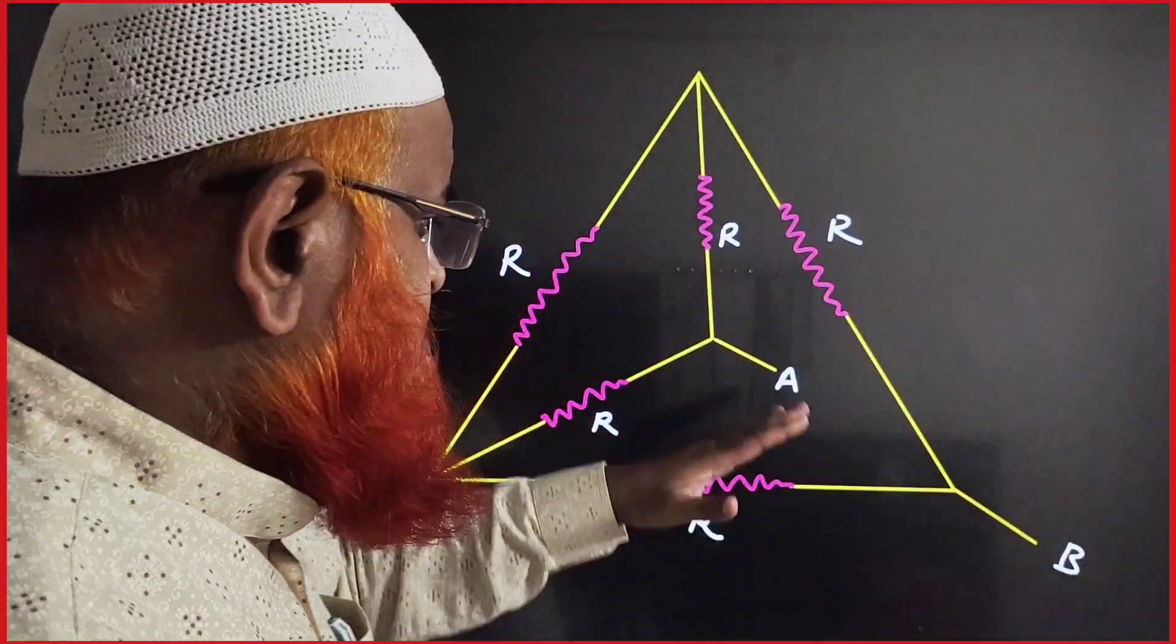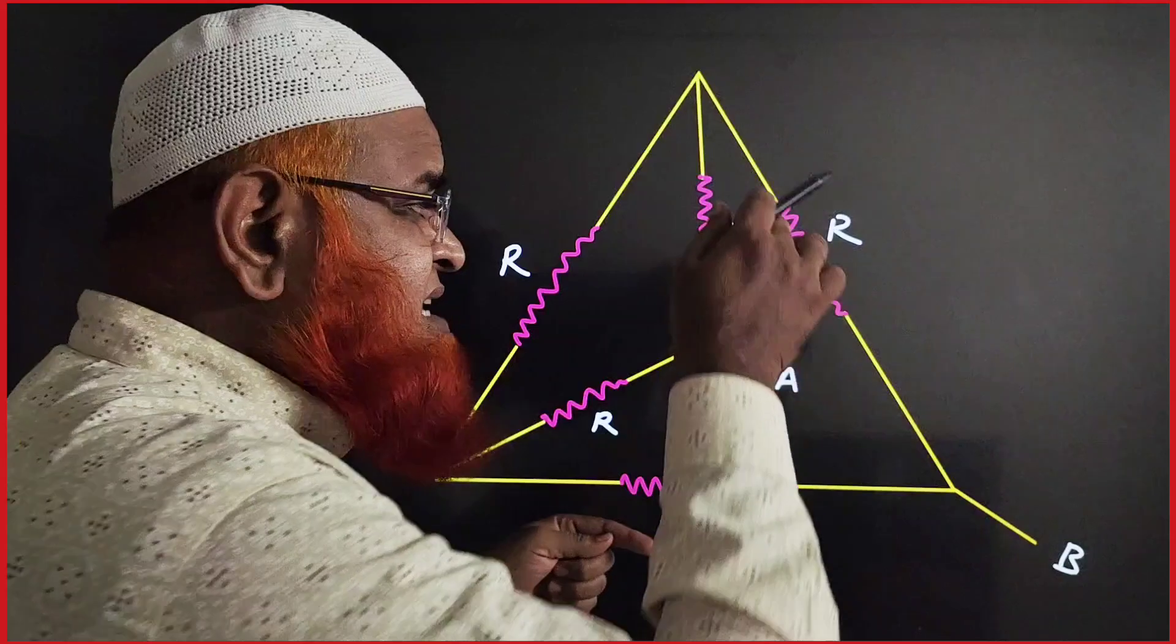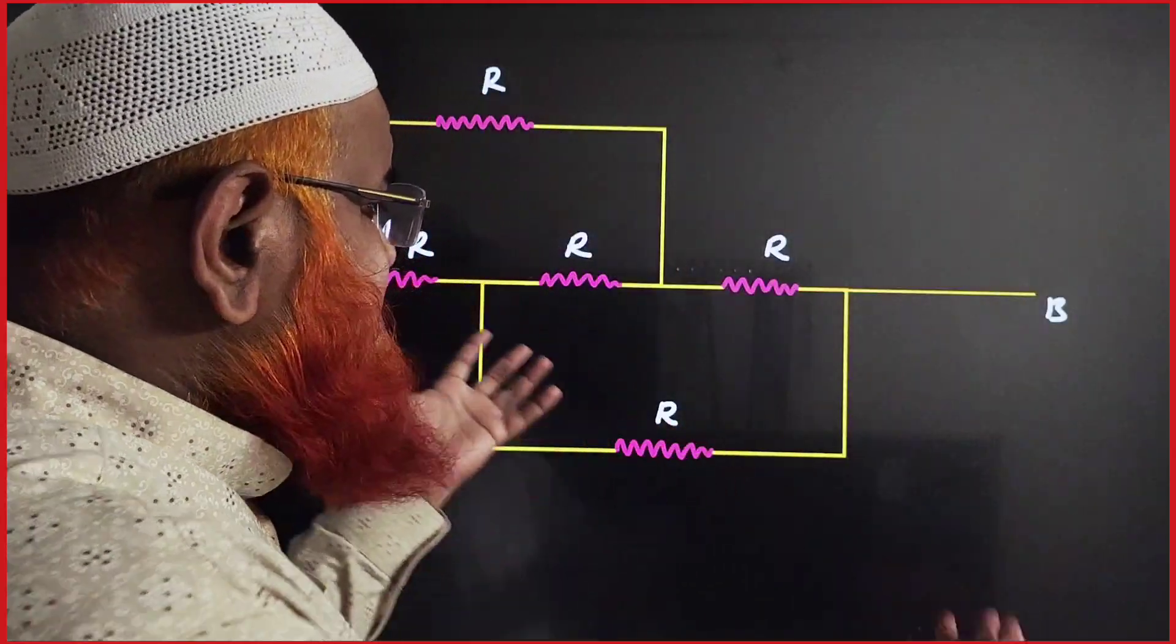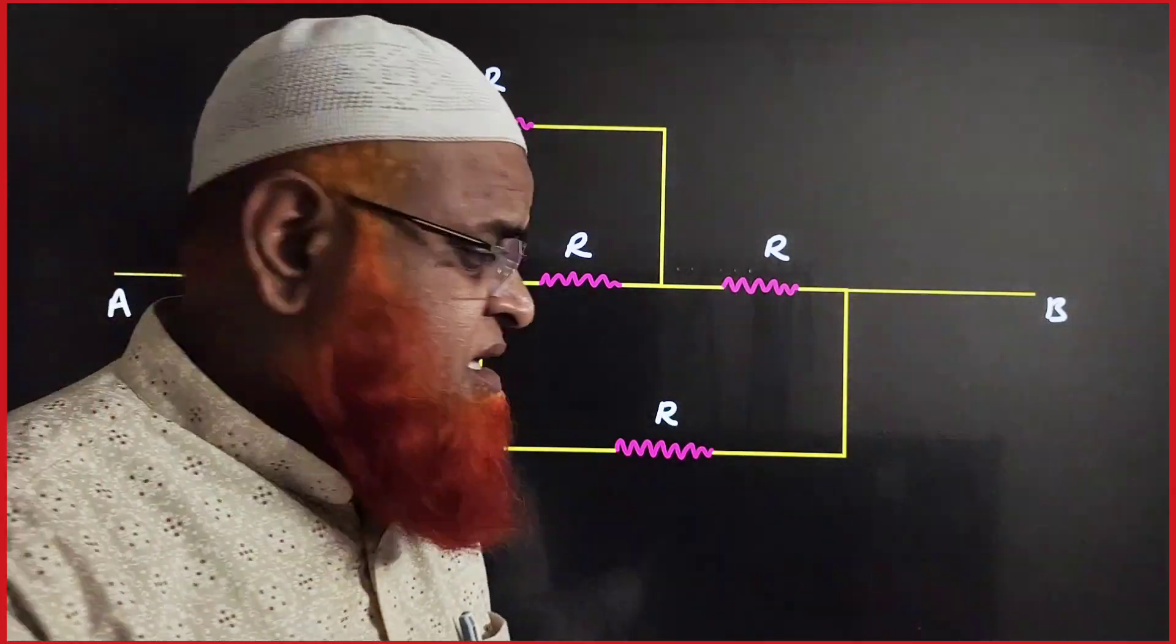Here also Wheatstone bridge. If you open this, this is also a Wheatstone bridge. So answer is R. Here also if you take this, this is also a balanced Wheatstone bridge. All the resistances are the same. Answer is R.